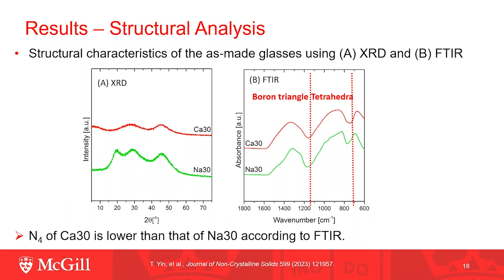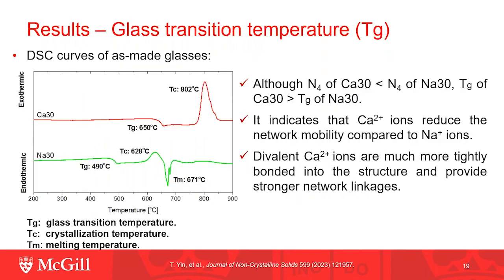XRD and FTIR analysis were used to study the structure of calcium-30 and sodium-30. XRD diffraction indicates their amorphous nature. In FTIR, the relative intensity for the B4 unit of calcium-30 is lower than that of sodium-30, indicating a lower N4 for calcium-30, which is in line with previous studies. Furthermore, thermal analysis shows calcium-30 has a higher glass transition temperature than sodium-30. Although calcium-30 has lower N4 than sodium-30, this indicates that replacement of sodium by calcium ions reduces network mobility, because the divalent nature of calcium ions results in tighter bonds and stronger network linkage in borate glasses.